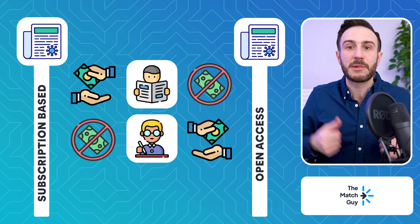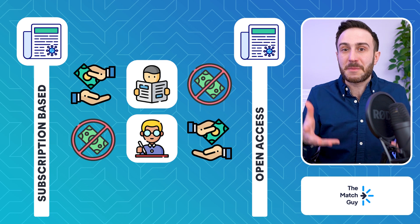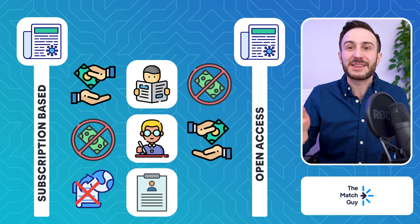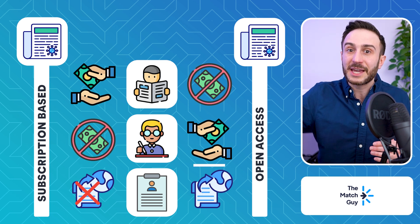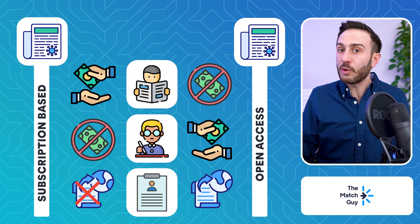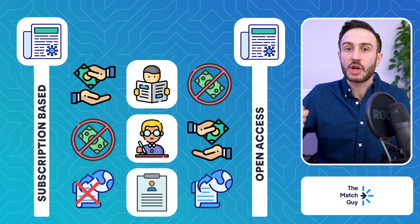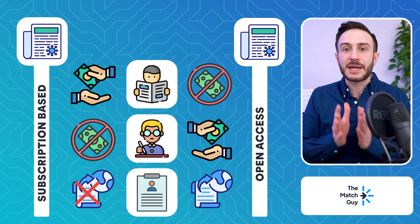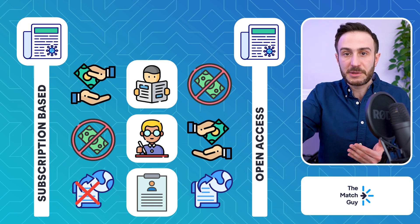However, with open access journals the author pays the journal when they publish. A lot of subscription-based journals — where the author doesn't pay to publish — do not publish case reports. Case reports are generally published in open access journals, which means you have to pay to publish your case report. That's not always the case — there are exceptions — but generally case reports are published in open access journals where you have to pay.